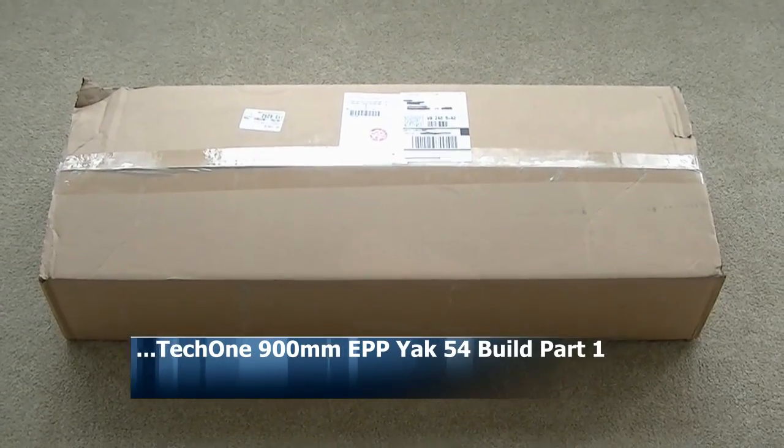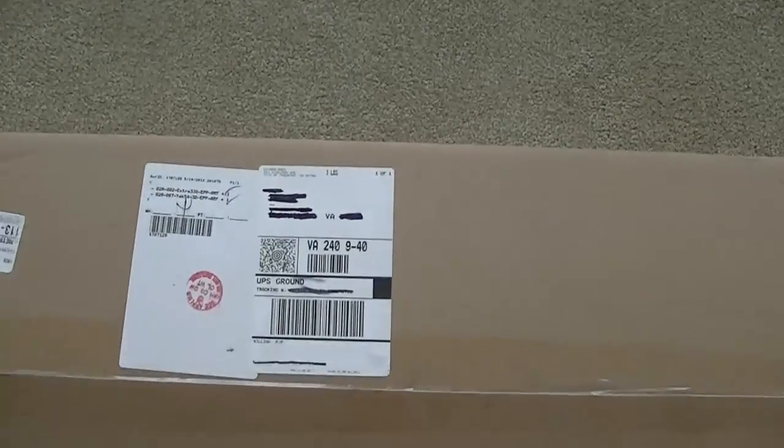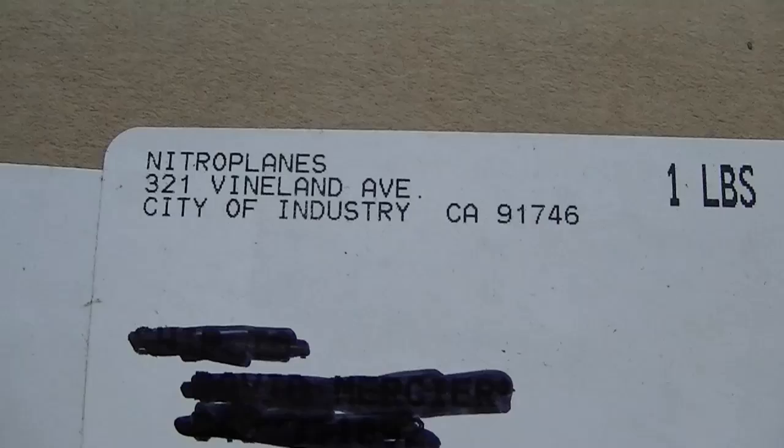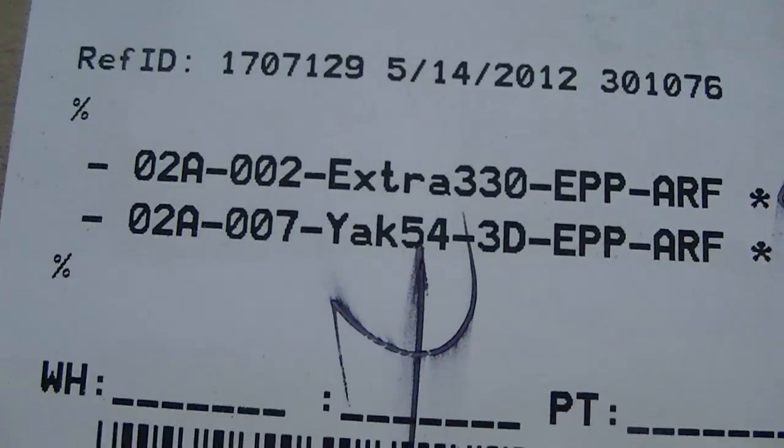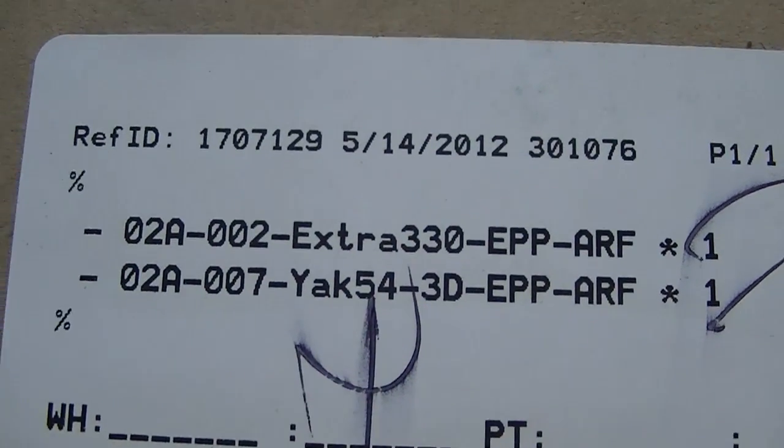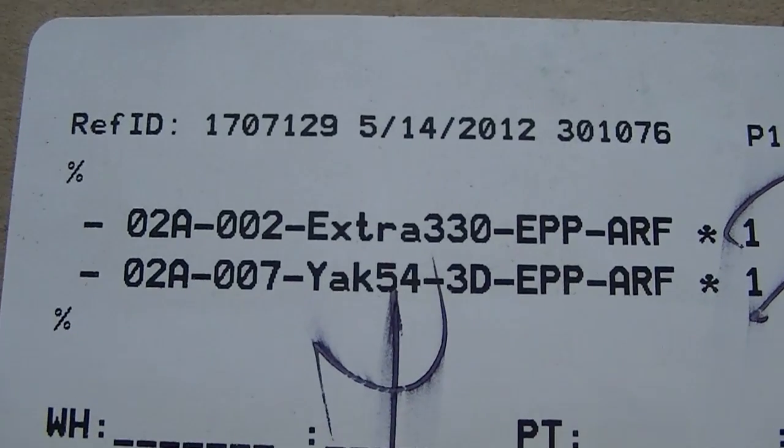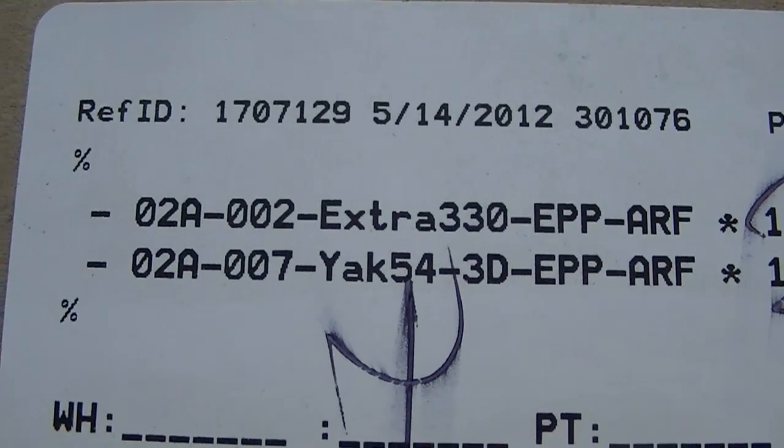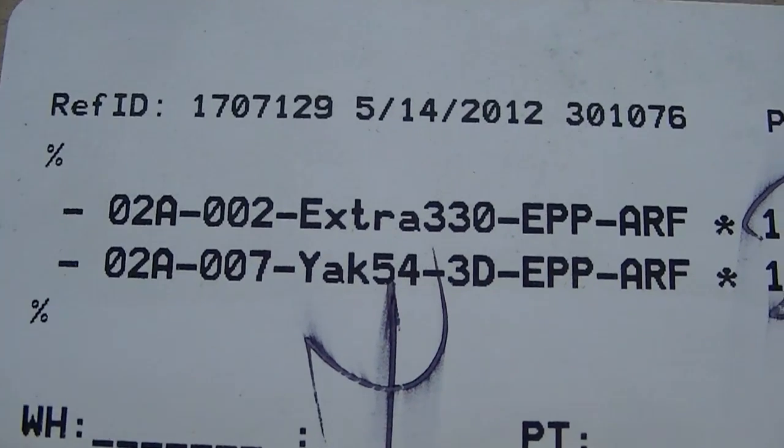A box just arrived all the way from California to Virginia from Nitro Plains. Inside the box we have two Tech 1 aircraft: one is the Extra 330 EPP-ARF and the other is the Yak 54 3D EPP-ARF.